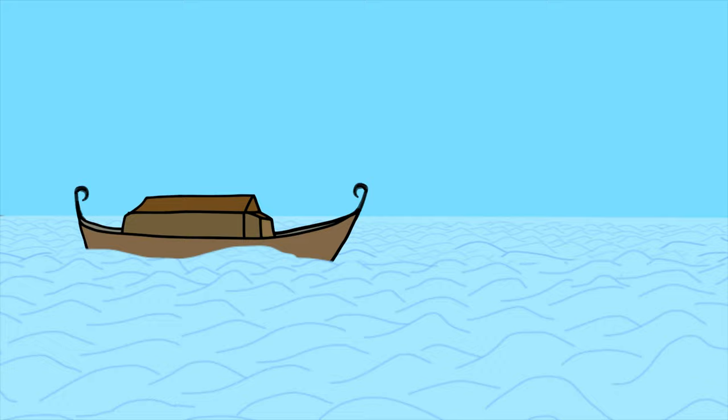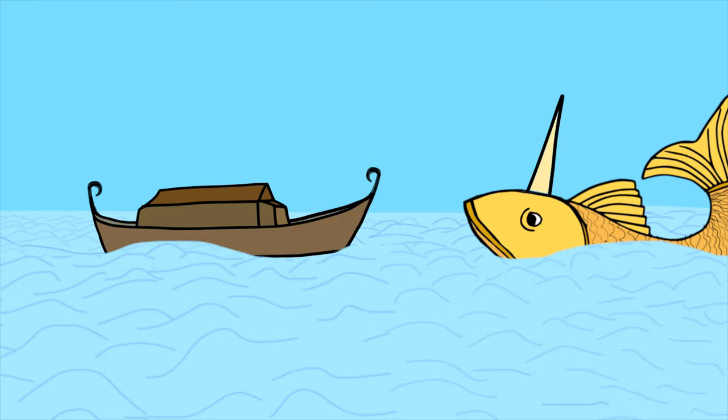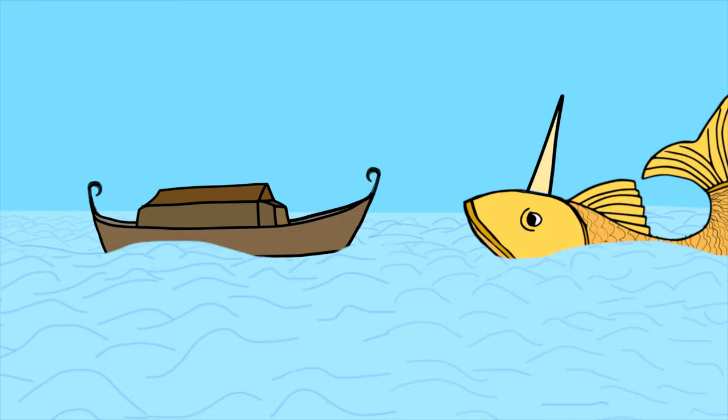As the boat was tossed about by the ocean's turbulence, the fish appeared again and asked him to tie the boat to its horn using Vasuki as a rope and steered them safely.